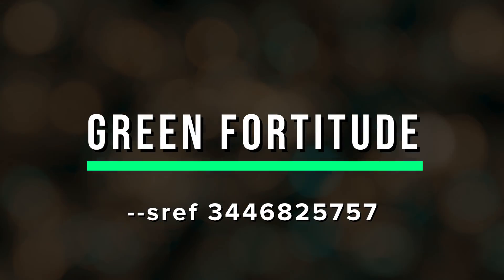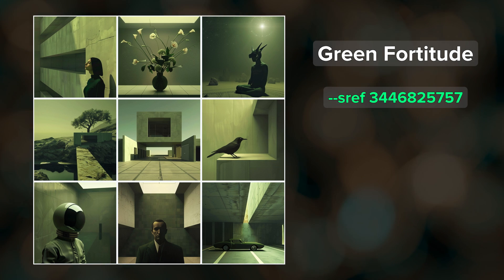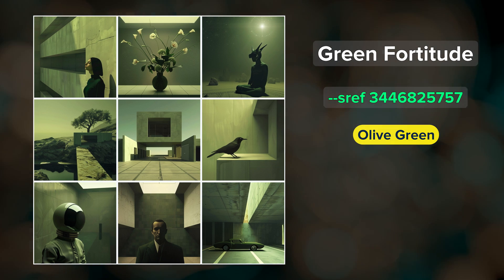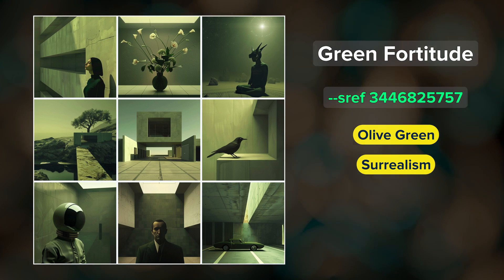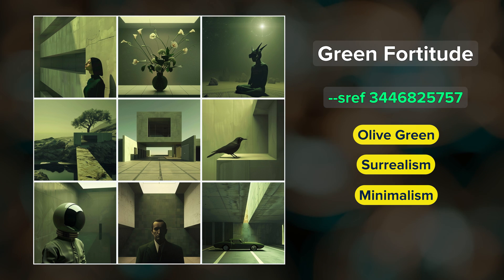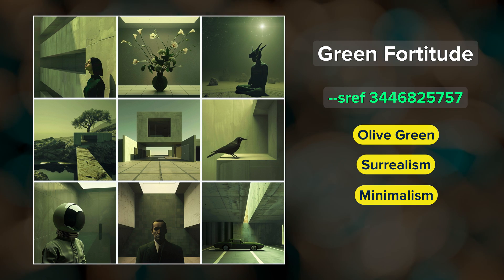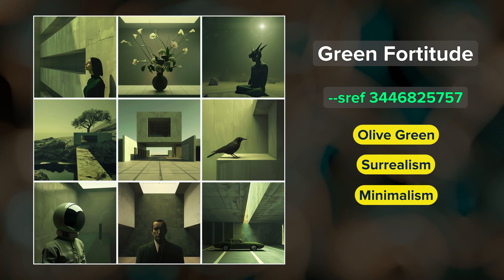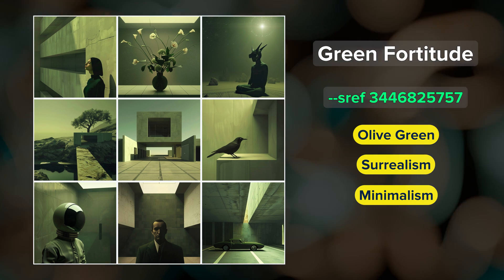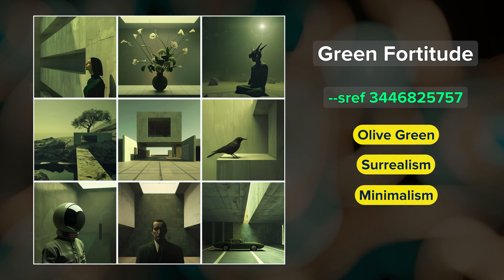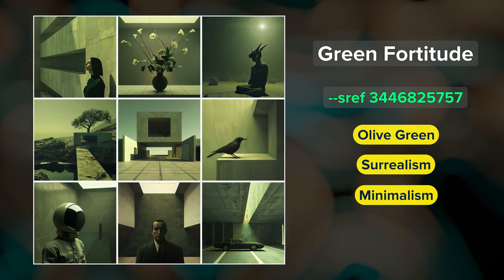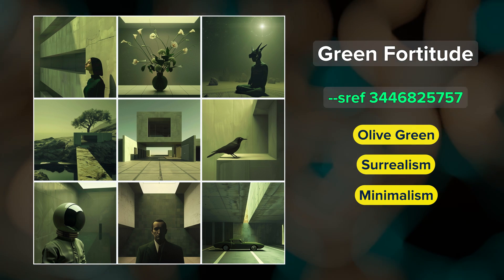Green Fortitude — defined by its shades of olive green, this style combines surrealism and minimalism. Blocky, concrete structures and lone, contemplative figures are common elements in these images. I think this style feels a bit somber, isolating, and reflective.